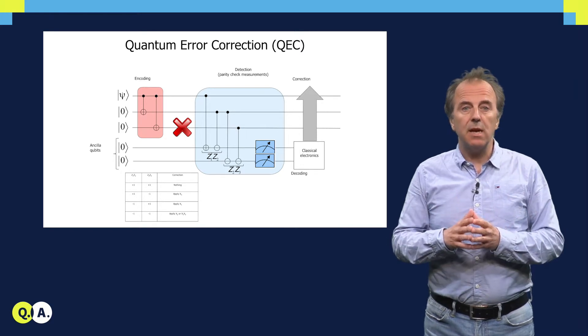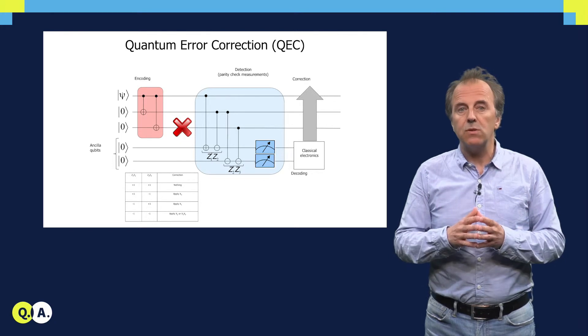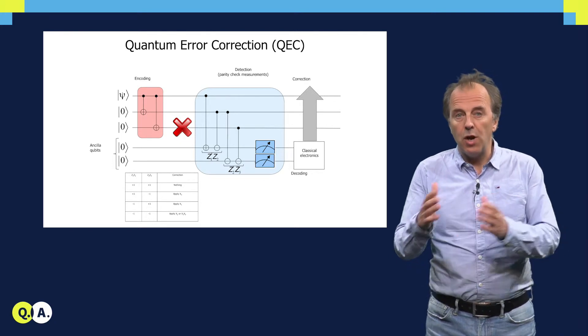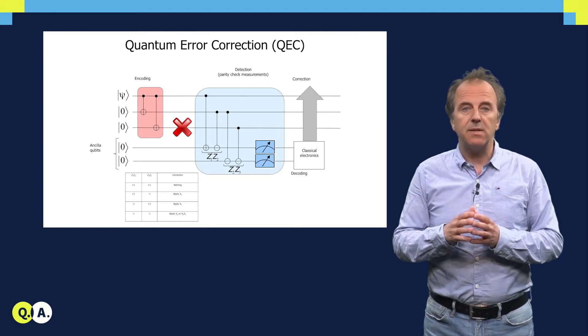Once the measurements of the ancilla qubits are received, a decoder will interpret the readout and determine whether or not an error has manifested itself for which some correction is necessary.